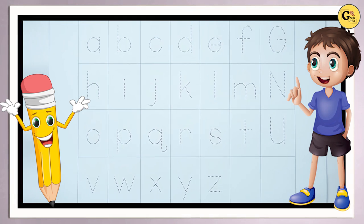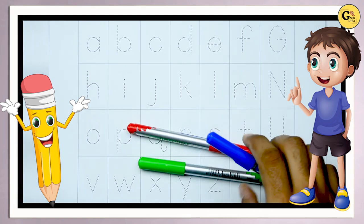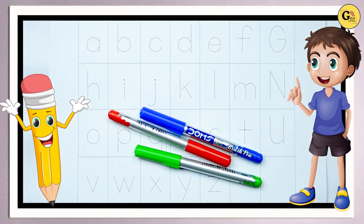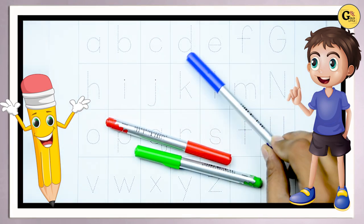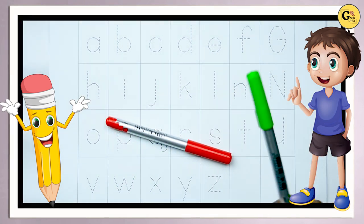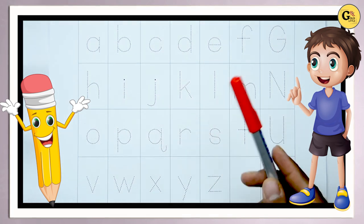Hello friends, today we learn A to Z, small a to z. Let's start with some colors. It's blue color, green color, red color.